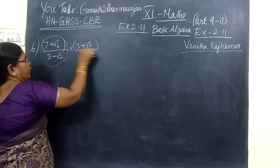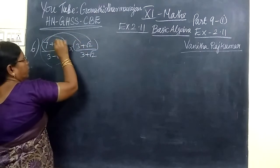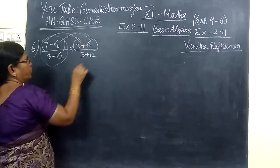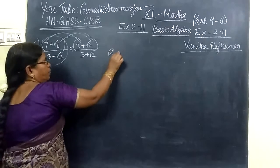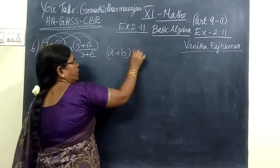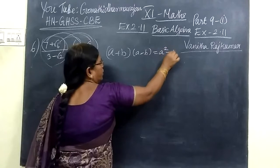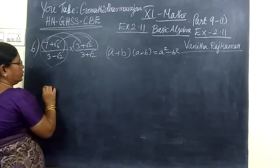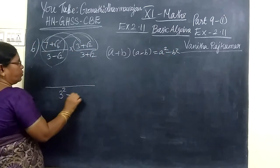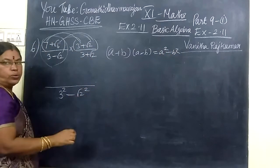Now you multiply these two. This one, a plus b into a minus b equal to a square minus b square. So denominator we are writing 3 square minus root 2 square.